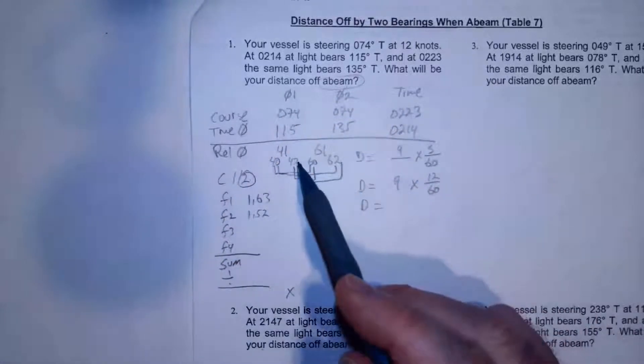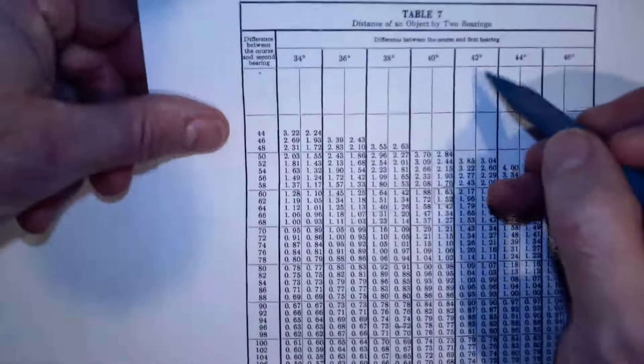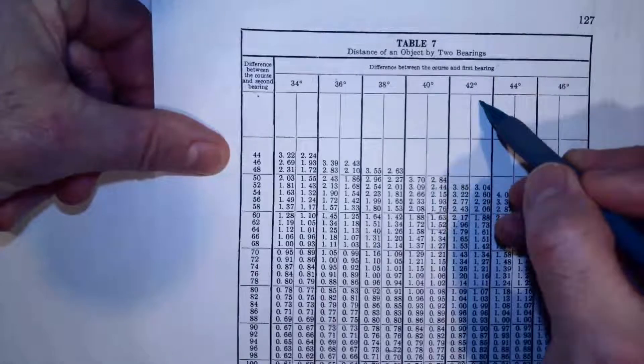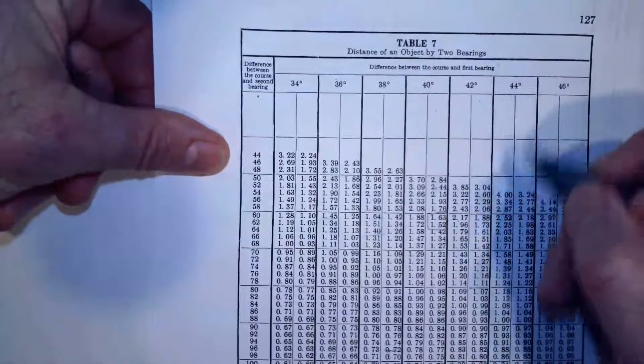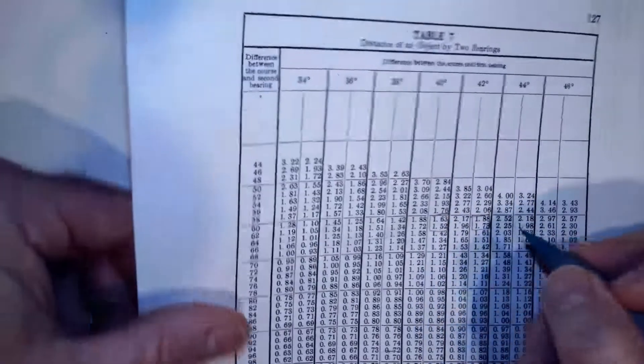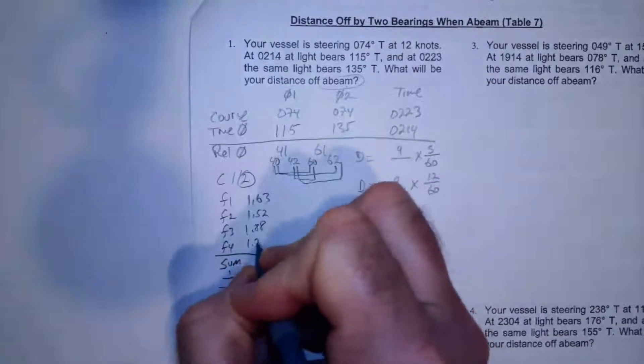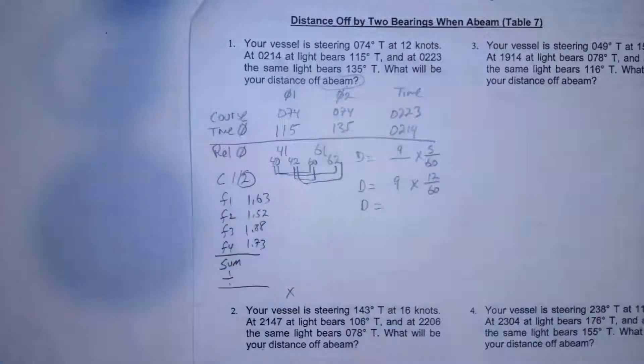Now I'm going to do 42, 60 and 42, 62. So I come over here. Here's 42. I got to go to the second column because it's abeam and I go 42, 60, 42, 62. That's 1.88 and 1.73, 1.88, 1.73. I'm done with Table 7.